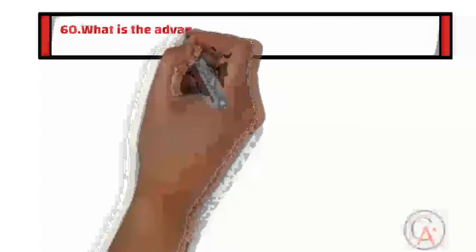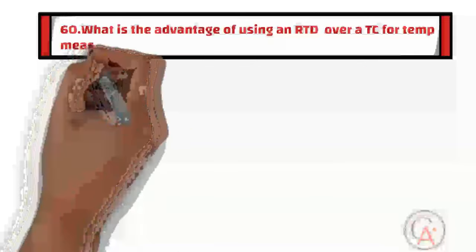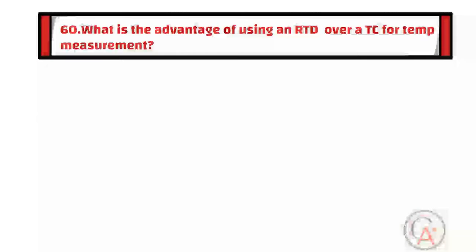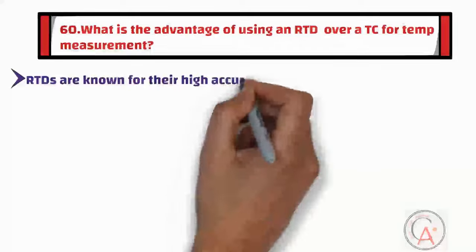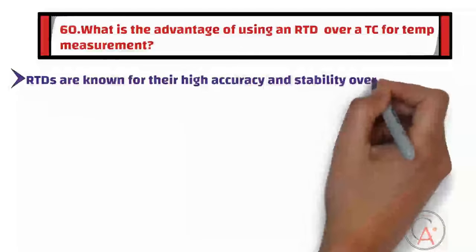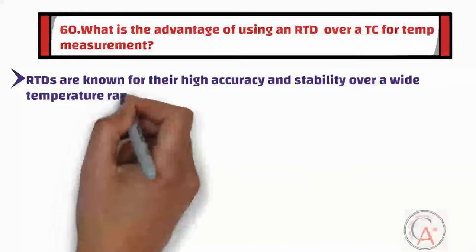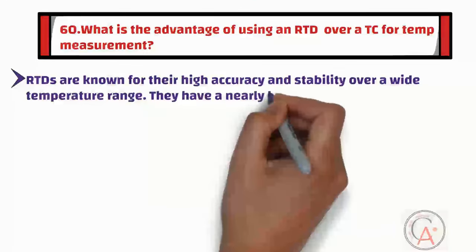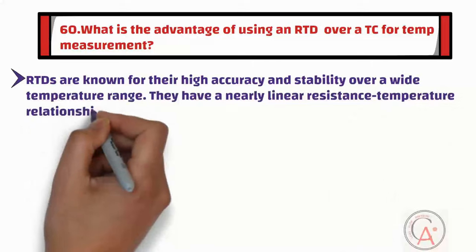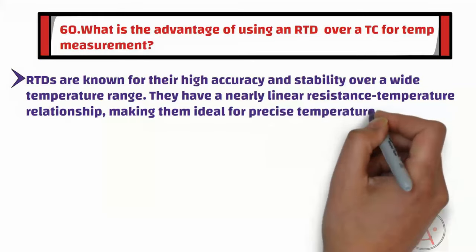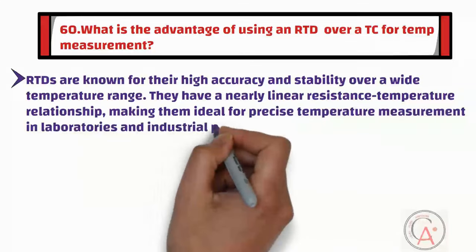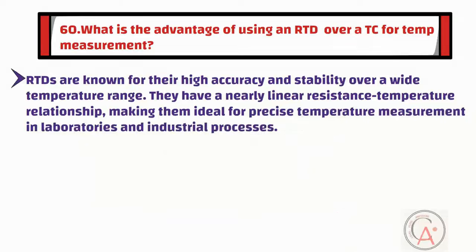Question sixty is: what is the advantage of using an RTD over a thermocouple for temperature measurement? RTDs are known for their high accuracy and stability over a wide temperature range. They have a nearly linear resistance-temperature relationship, making them ideal for precise temperature measurement in laboratories and industrial processes.